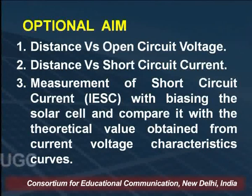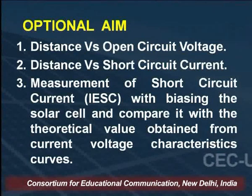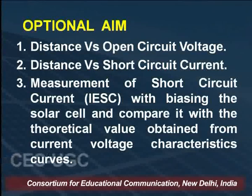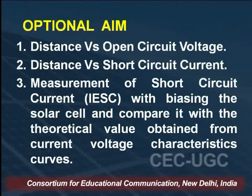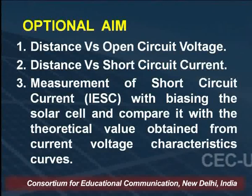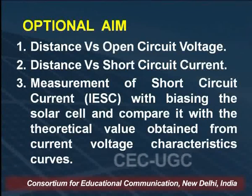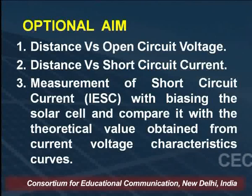Apart from this, there are optional aims. Number 1: distance versus open circuit voltage. Number 2: distance versus short circuit current, where distance means the distance between the lamp and the panel of the solar cell. We can also find the open circuit voltage and the short circuit current. The third optional aim is the measurement of short circuit current with biasing the solar cell and comparing it with the theoretical value from the current-voltage characteristics curve.